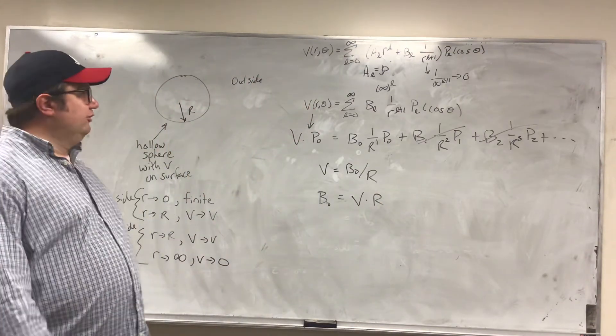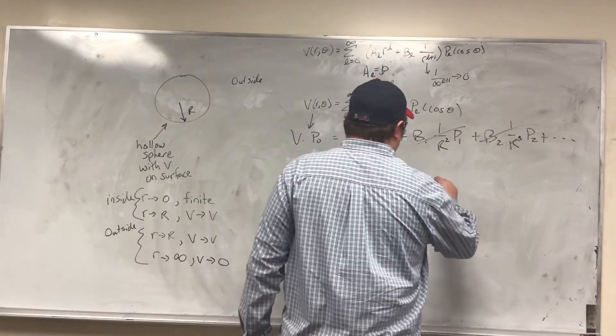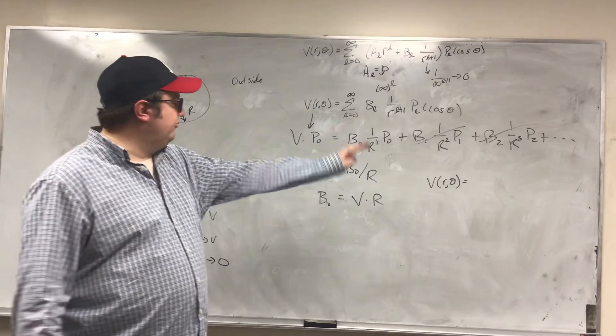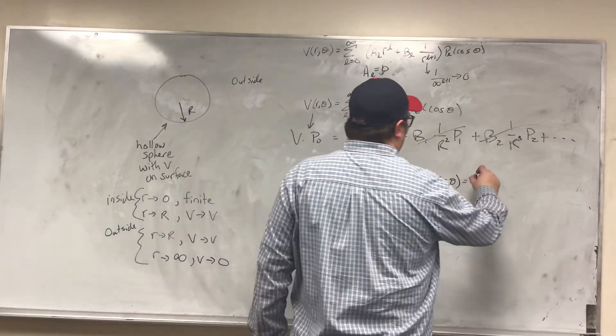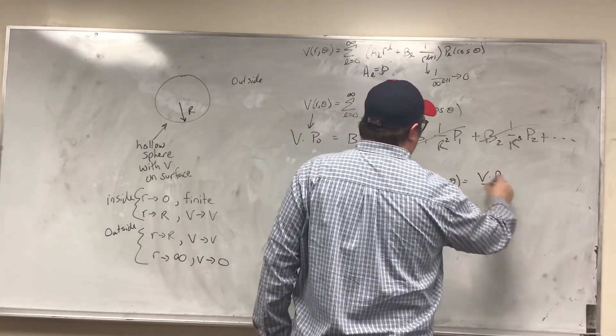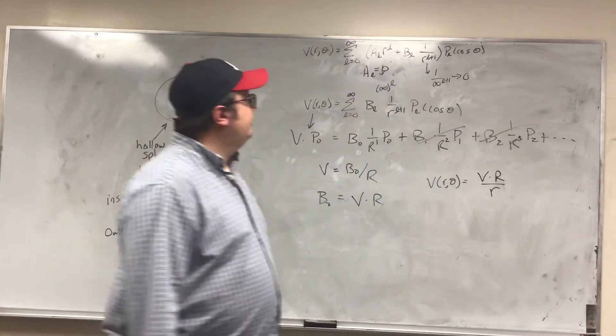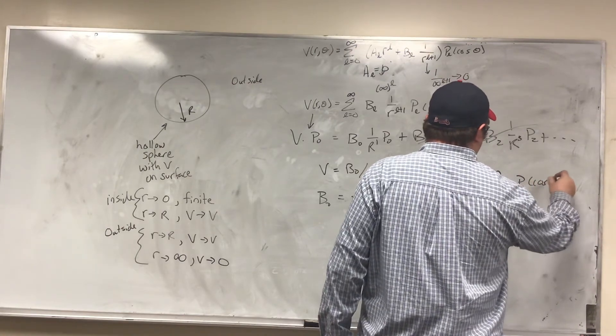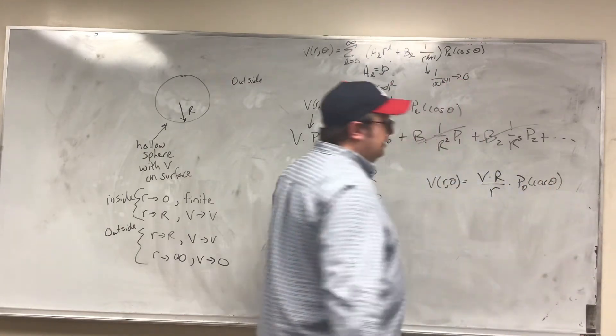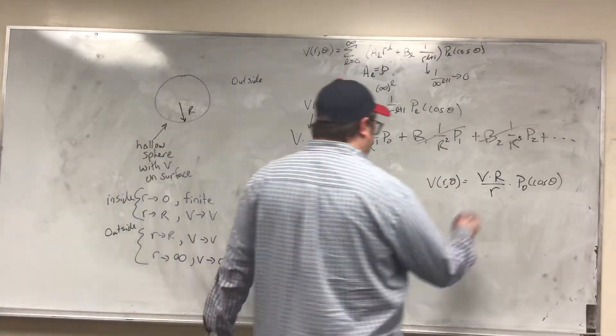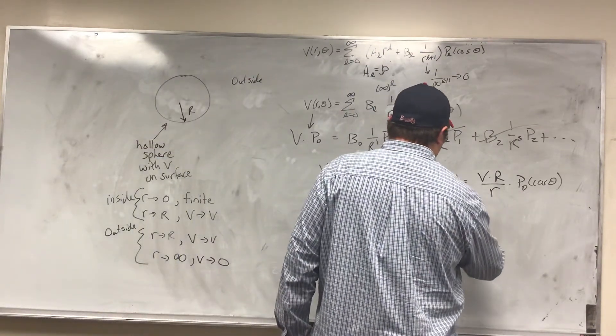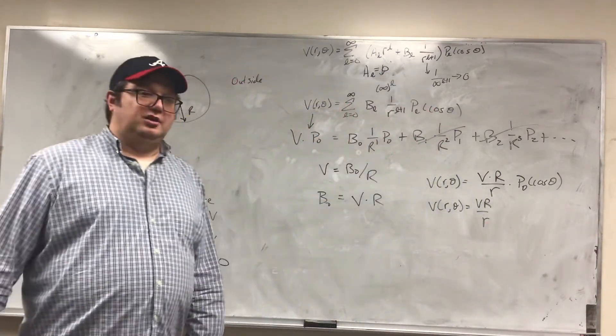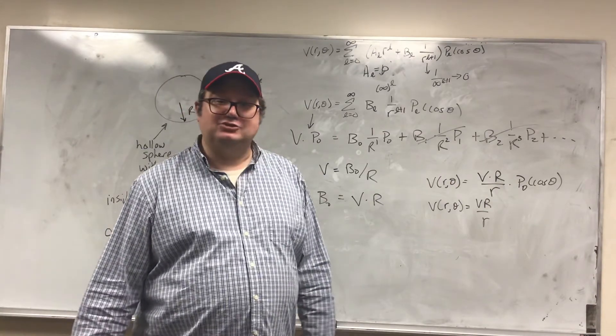So if I look at the solution outside, it's going to be V as a function. Again, we're only going to have the first term. All the others are going to be 0. So you're going to get V times R divided by little r, times P_0 cosine theta. Well, here that P_0 is just 1, because it's the 0 Legendre polynomial, and you just get VR 1 over little r. And that tells me what my potential will be.